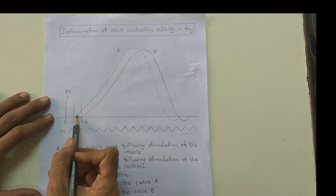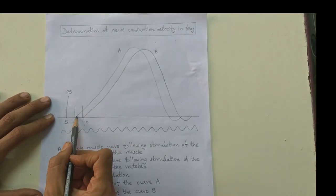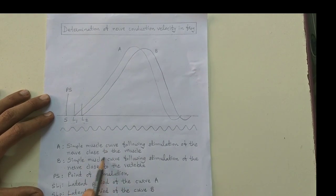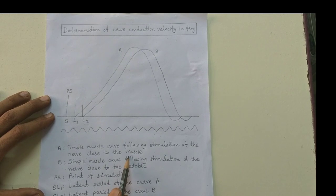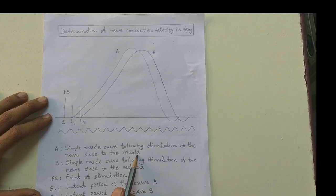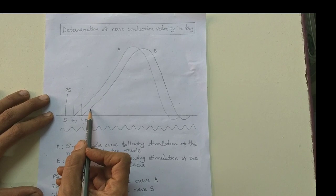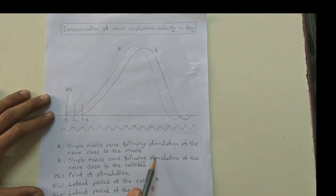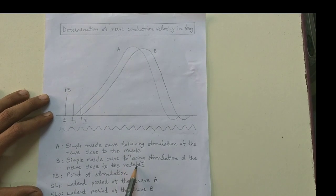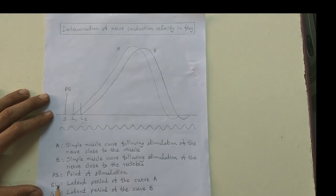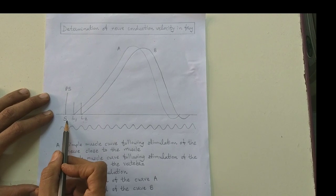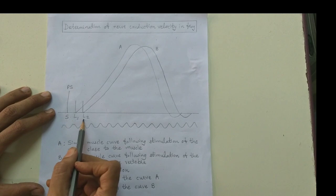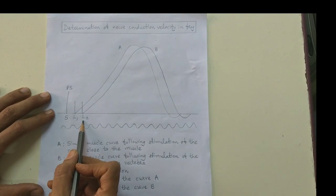This is graph A. This graph A is the simple muscle curve following stimulation of the nerve close to the muscle, that is at the muscle end of the nerve. Graph B is the simple muscle curve which we get following stimulation of the nerve close to the vertebral end. Here SL1 is the latent period for curve A and SL2 is the latent period for curve B.